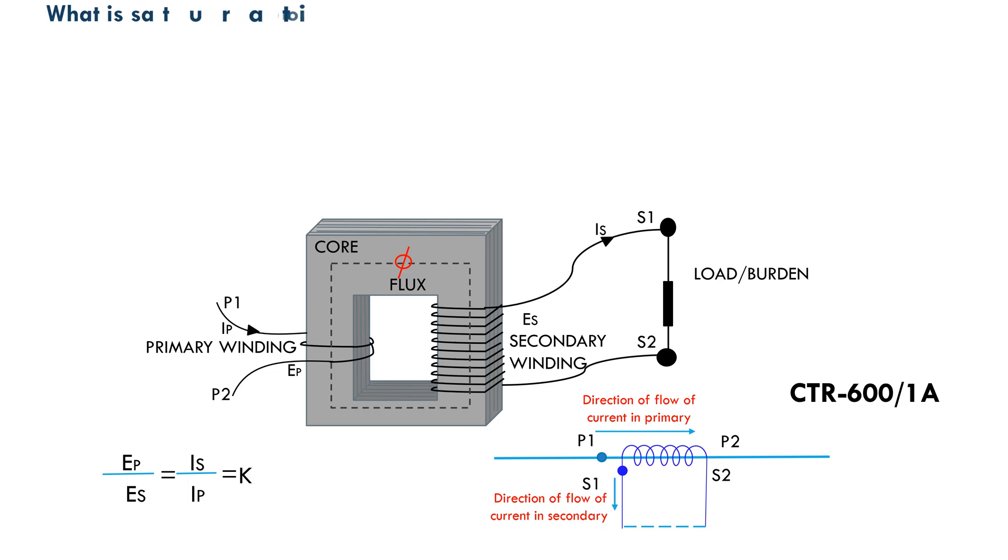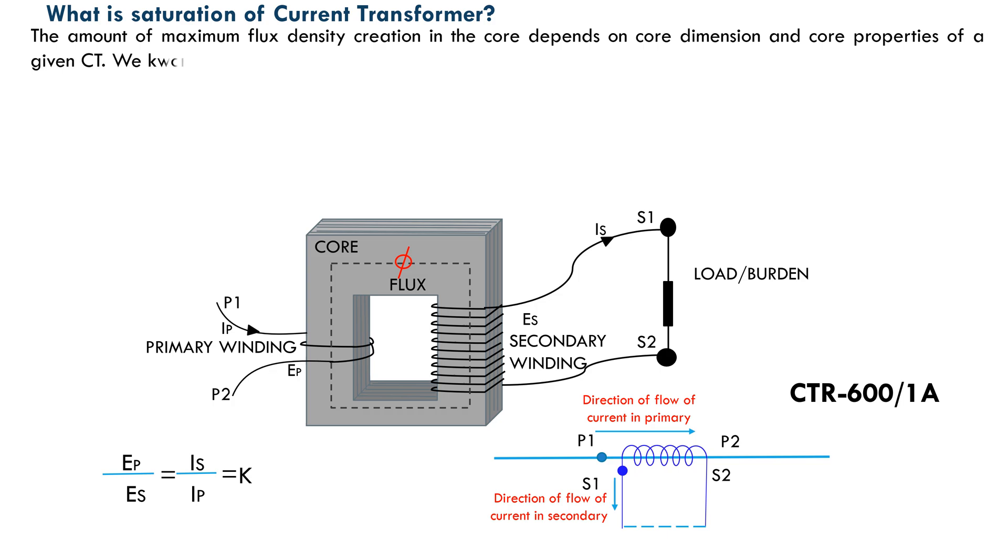What is saturation of current transformer? The amount of maximum flux density creation in the core depends on core dimension and core properties of a given CT. We know that flux in the core created by primary current which links with secondary winding causes flow of secondary current in the secondary winding under short-circuit condition.